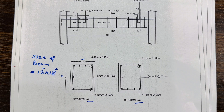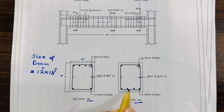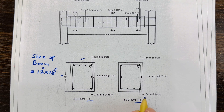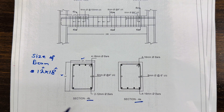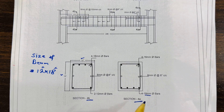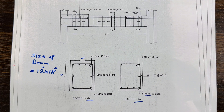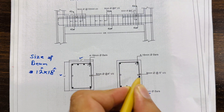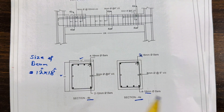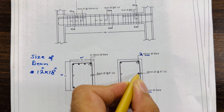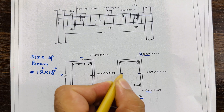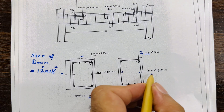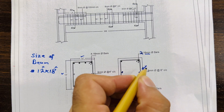In Section 4A, we have four numbers of steel rods at the bottom, which is called the tension zone. The diameter is 16 mm. At the top portion, there are two numbers of bars, also 16 mm diameter. There are also two side bars — you can call them neutral bars — with a diameter of 16 mm as well.